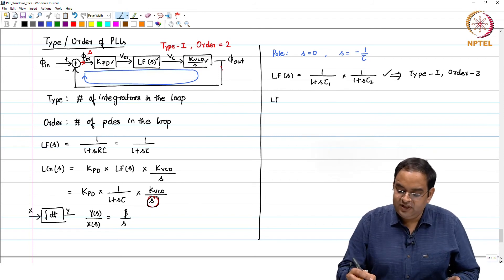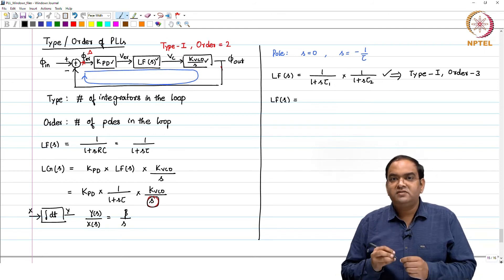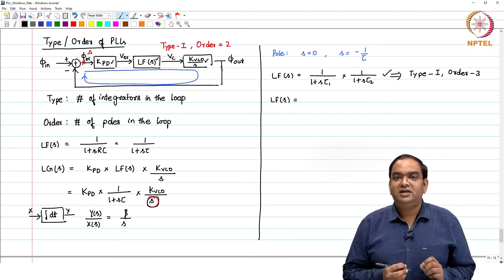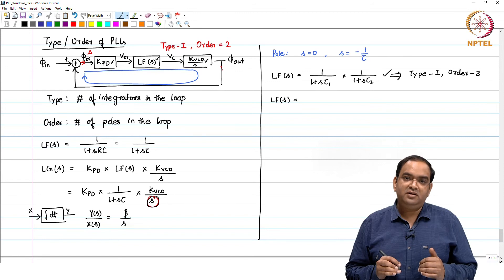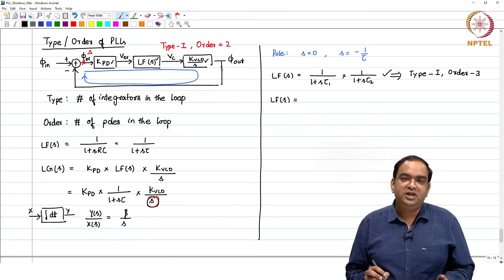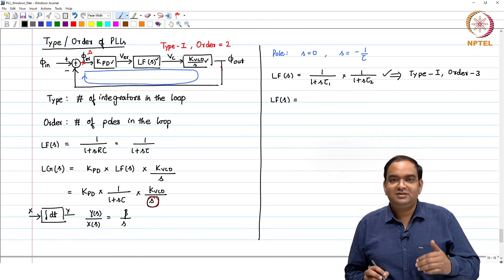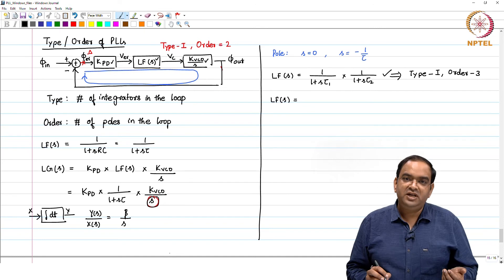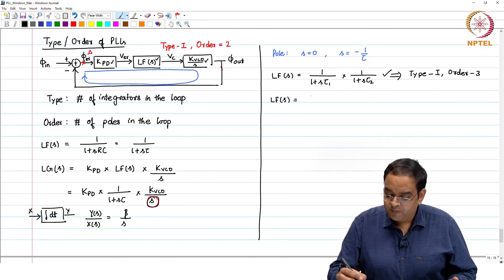Another example. These are just the examples of how the choice of the loop filter is going to change the type and order of the loop filter. And by the way, this type and order, they are just not the terms which we will just use in passing by, but a type of the PLL decides many more things about the operation of the PLL, we will see that.